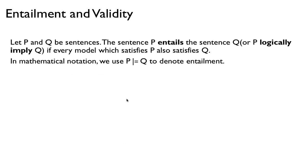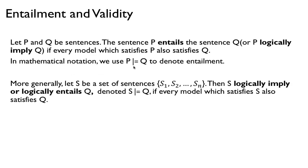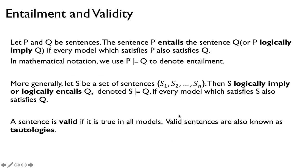If p and q are sentences, then p entails q, or p logically implies q, if every model that satisfies p also satisfies q. In general, if you have a set of sentences s1 to sn, then that set S logically entails q if every model that satisfies S will also satisfy q. And finally, a sentence is valid if it's true in all models — another way of saying this is that a tautology is a valid sentence.